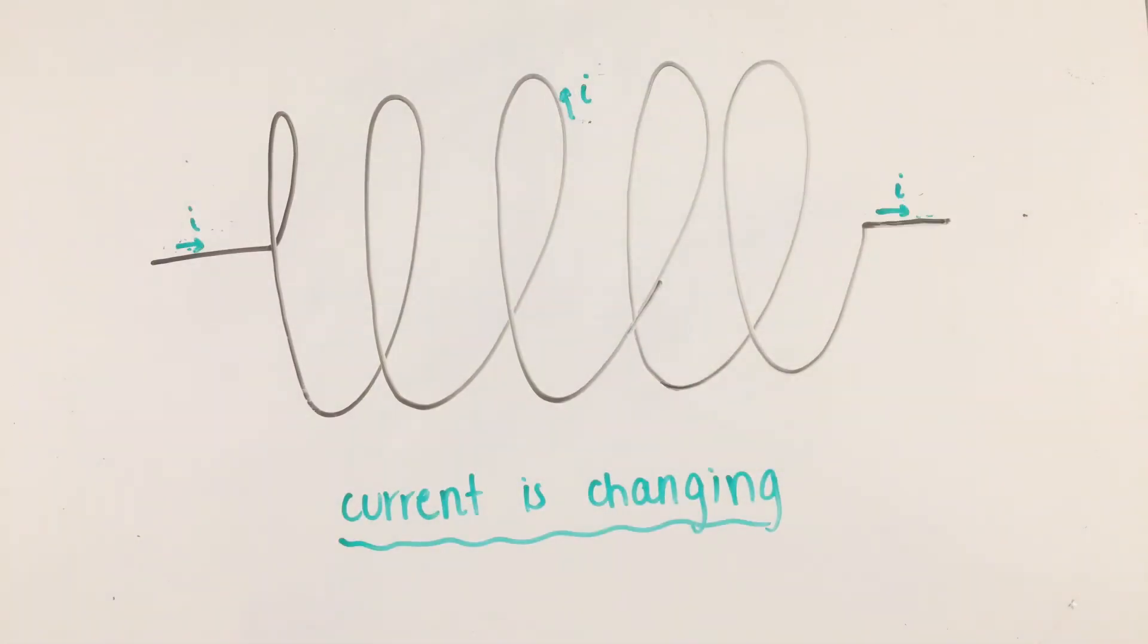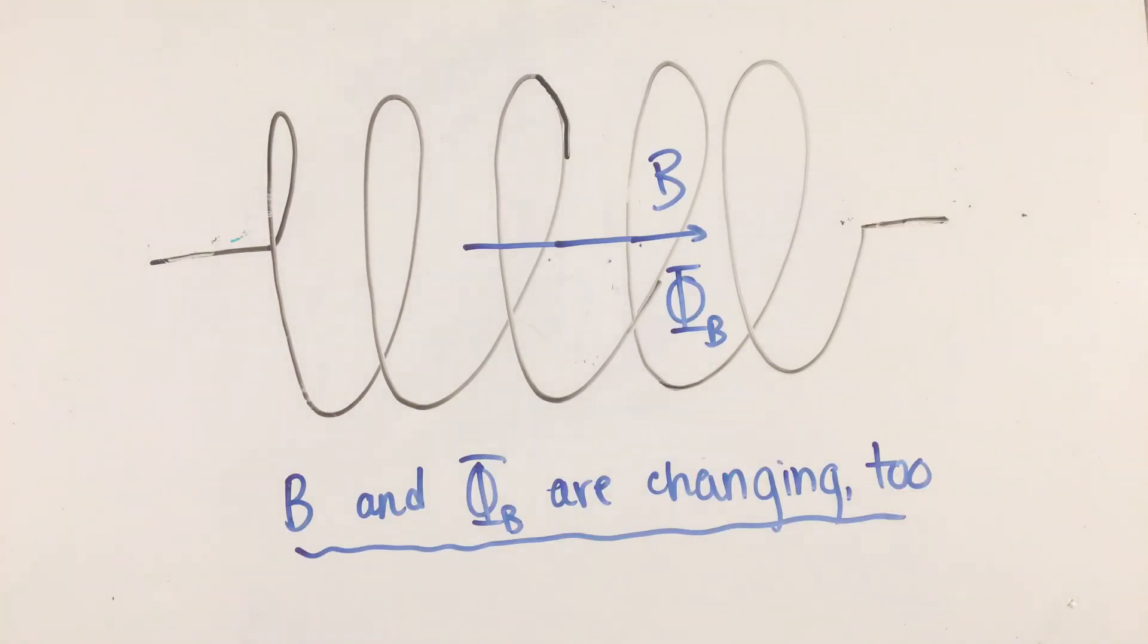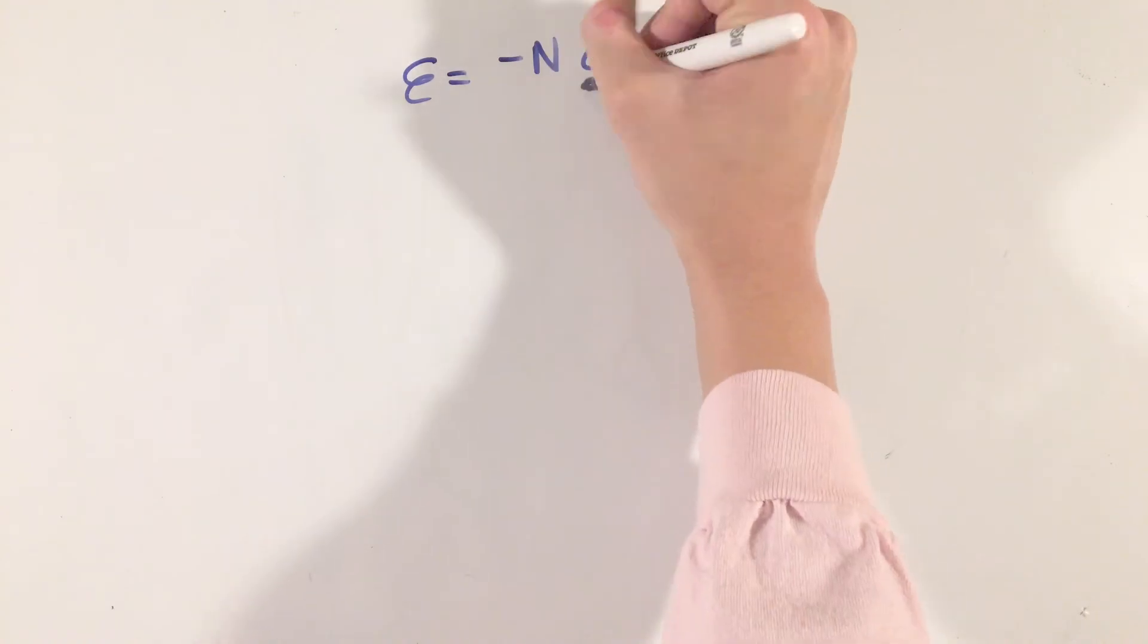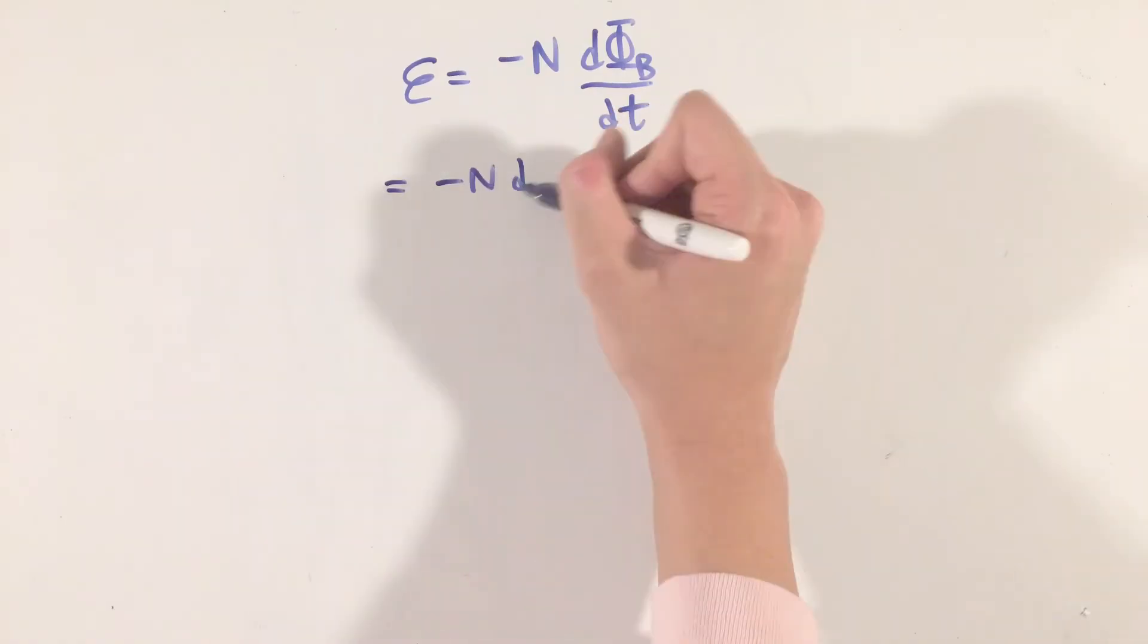Thus, because currents and solenoids produce magnetic fields, which in turn produces a magnetic flux, the magnetic flux inside the inductor changes in this brief period as well. As a result, we can use Faraday's law of induction to calculate the EMF, or potential difference, associated with this inductor.